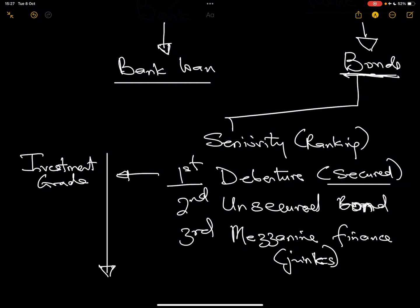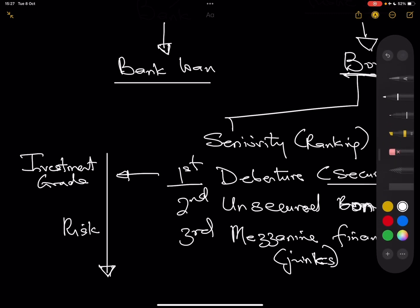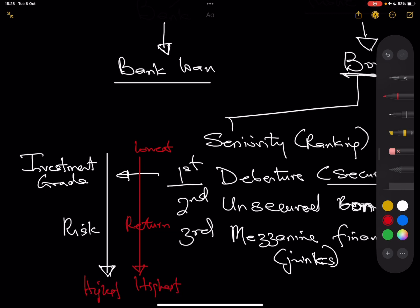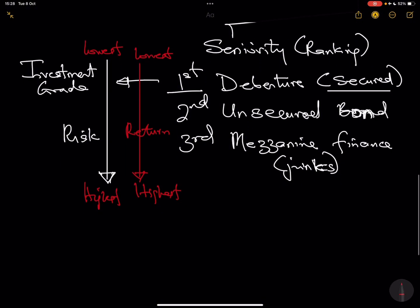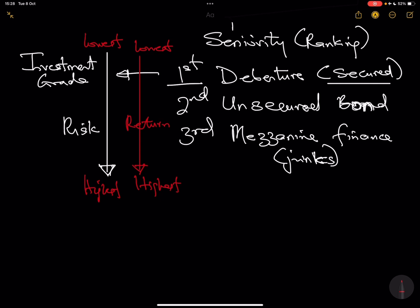As you go down the ranking, risk increases. But with higher risk comes higher reward — so you expect return to increase going downward. This means debentures have the lowest return and junk bonds have the highest return, while debentures carry the lowest risk and junk bonds carry the highest risk. It is very important to note where those bonds are ranked, because it's a typical exam question.